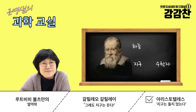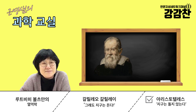당시에는 과학자라는 말이 없고 자연철학자라고 했는데, 갈릴레오는 수학자인데 자연철학자와 다르지 않다고 명함을 파고 다녔어요. 그래서 지구를 위로 올려버린 거예요. 사유 자체가 자기의 야망과 같이 가는 거죠. 왜 지구만 이렇게 낮은 취급을 받았냐는 거예요. 그래서 '돈다'는 말이 중요한 거예요. 하늘이 돌듯이 지구도 돈다는 것입니다.